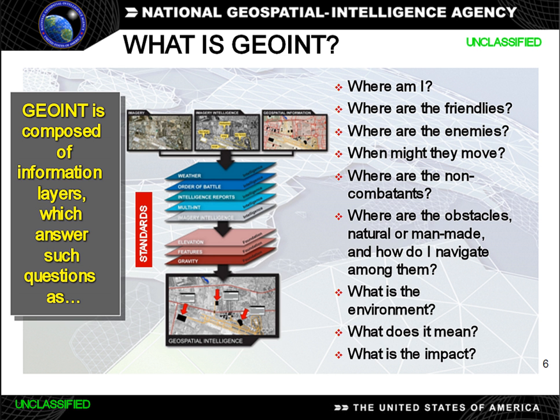A de facto definition of geospatial intelligence, which is more reflective of the broad international nature of the discipline, is vastly different from the de jure definition expressed in U.S. code. This de facto definition is: geospatial intelligence is a field of knowledge, a process, and a profession. As knowledge, it is information integrated in a coherent space-time context that supports descriptions, explanations, or forecasts of human activities with which decision makers take action. As a process, it is the means by which data and information are collected, manipulated, geospatially reasoned, and disseminated to decision makers.